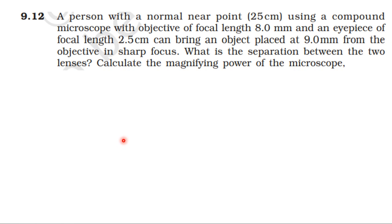From NCRT Textbook, from the topic Ray Optics and Optical Instruments, Exercise 9.12. A person with a normal near point of 25 cm using a compound microscope with an objective of focal length 8 mm and an eyepiece of focal length 2.5 cm can bring an object placed at 9 mm from the objective into sharp focus. What is the separation between the two lenses? Calculate the magnifying power of the microscope.